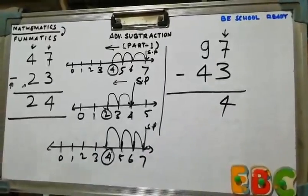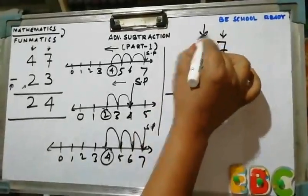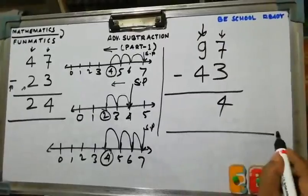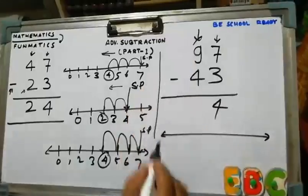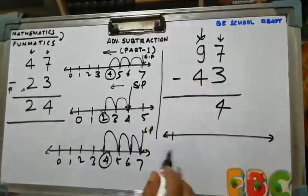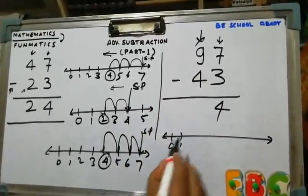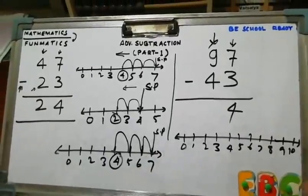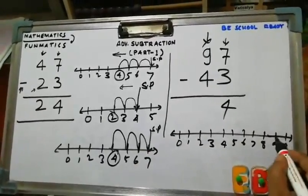Now, our pointer moves to where? 9. So we have to put 9 on the number line. This is the number line from 0 to 10, and here is 9.